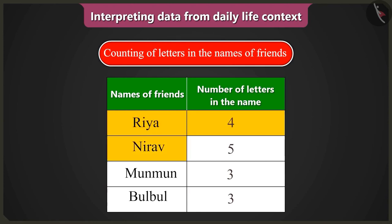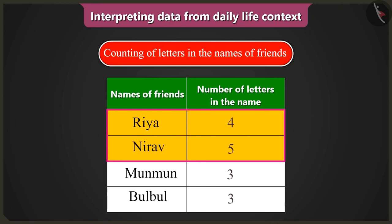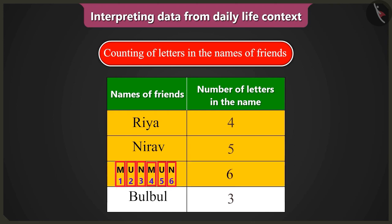Yes, and the second name is Nirav, which is made from five letters. Bubbly, your table is okay till here. Now, the third name is Munmun. There are not three but six letters in it. You counted M, U, and N in Munmun, so you wrote three letters. But these three letters come two times, so that is a total of six letters.